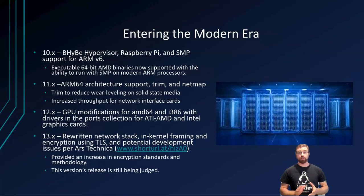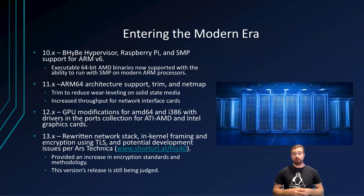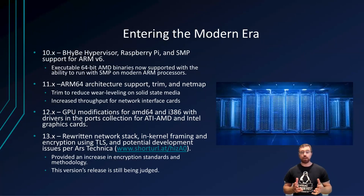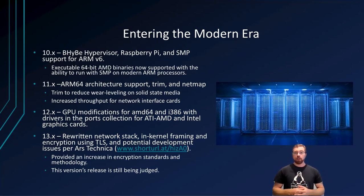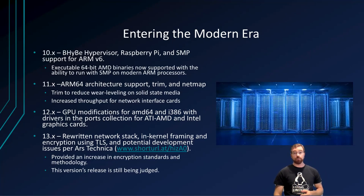Moving on to FreeBSD 10, released in 2014 with a Type 2 hypervisor called the BHyve hypervisor, support for the Raspberry Pi was developed and SMP support for ARM version 6 was developed. 64-bit Linux binaries were finally supported through the optional compatibility layer. This is useful as the Pi could be used in a production environment such as on the floor of a factory to monitor metrics. Additionally, 64-bit AMD-based applications native to Linux could now also be run on FreeBSD, making the conversion from Linux to FreeBSD more appealing since they would not have to rewrite the entire program.